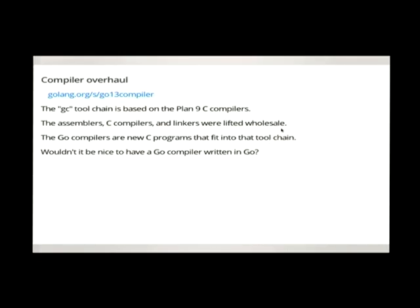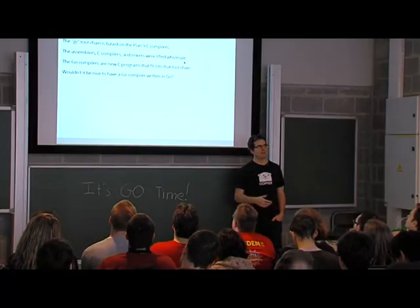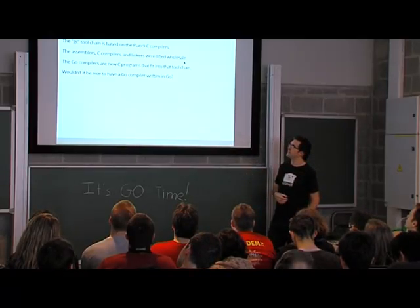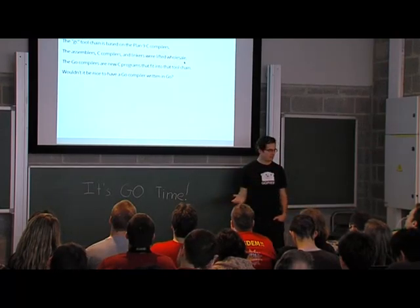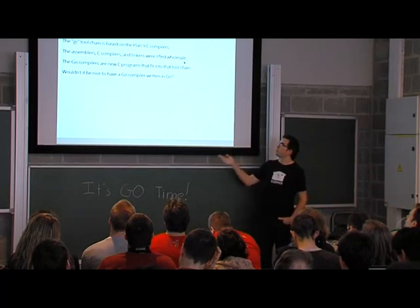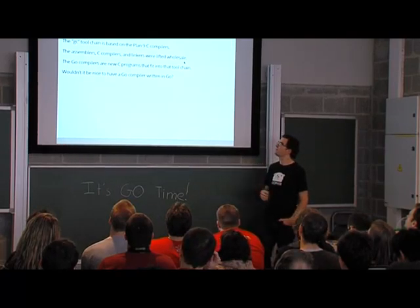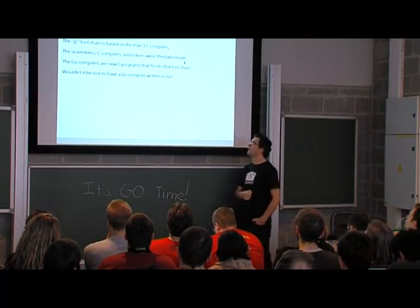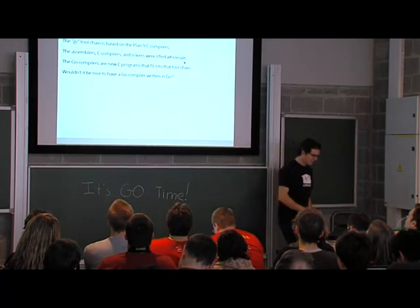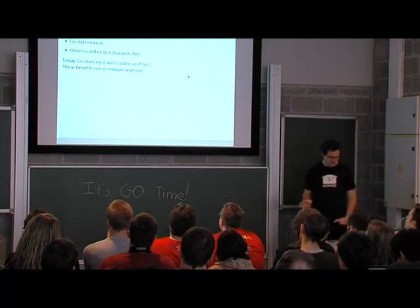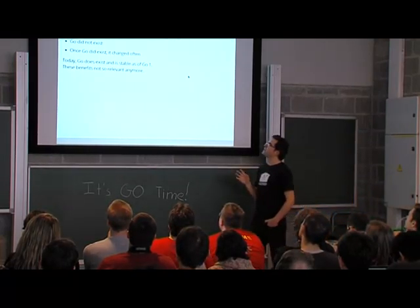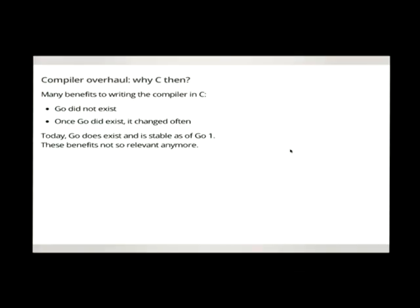So, this brings me to the final major thing, which is, happened, starting in 1.3, but will probably take a couple of releases to be fully realized. And that is an overhaul of the compiler entirely. And so as I mentioned, it's based on the Plan 9 C compilers. And that's all written in Plan 9 C. The assemblers, C compilers, and linkers were all taken wholesale. The Go compilers are a new C program that fit into that tool chain. But it would be better if we had a Go compiler written in Go. Now, the reason why we started with C then, in the beginning, is because Go didn't exist. And bootstrapping a compiler in the same, in its own language, is difficult even when the language is stable. But when you're actually actively developing the language, while developing the compiler, it creates fiendish bootstrapping issues. Where you have to have several versions of a compiler whenever you change language features and syntax and so on.